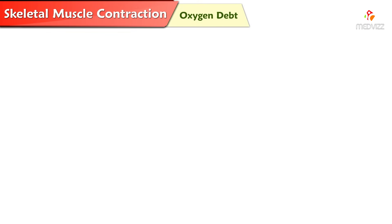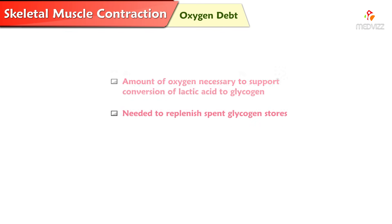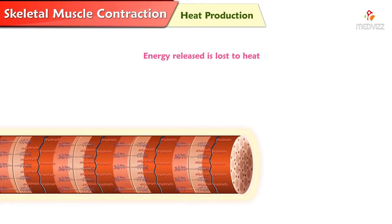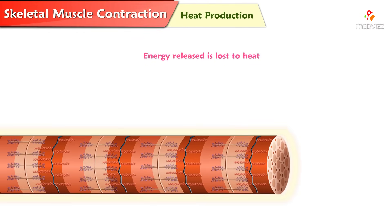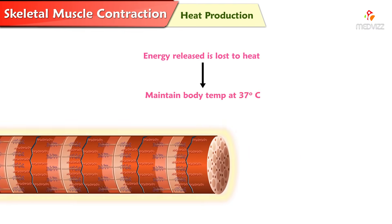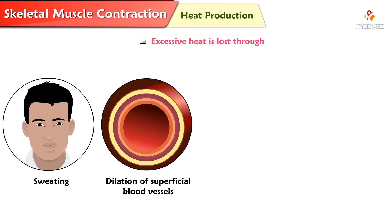Oxygen debt is the amount of oxygen necessary to support the conversion of lactic acid to glycogen. This conversion is needed to replenish spent glycogen stores. Heat production: almost half of the energy released during muscle contraction is lost to heat, which helps maintain our body temperature at 37 degrees Celsius. Excessive heat is lost through many negative feedback mechanisms including sweating, dilation of superficial blood vessels, increased breathing rate, and increased heart rate.